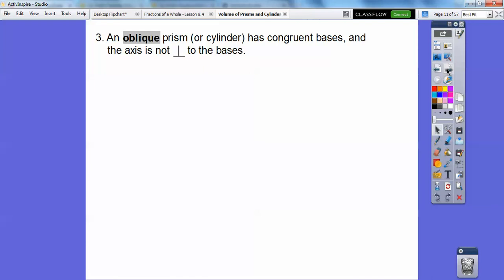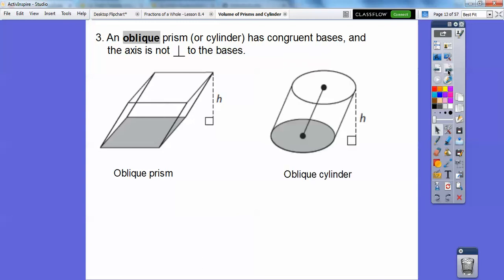An oblique prism or cylinder has congruent bases and axes that are not perpendicular to the base. Here's an oblique prism. Notice that this base and this base are congruent, but it doesn't make a right angle, so the height is hiding out here. The height is a perpendicular segment that connects the top base to the bottom base. And sometimes it's outside. Here's an oblique cylinder.